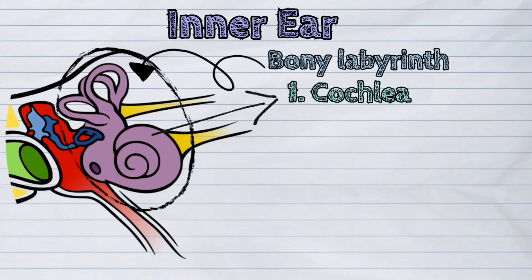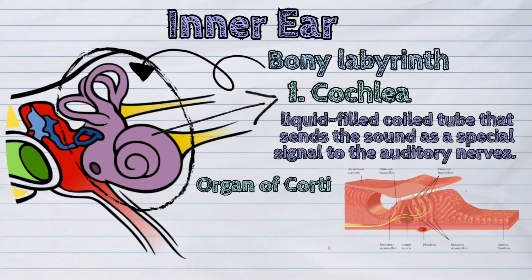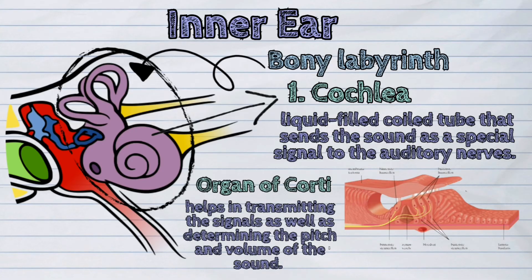First is the cochlea. It is a liquid-filled coiled tube that sends the sound as a special signal to the auditory nerves, which are the parts that transmit the sound signal to the brain. The cochlea also contains the organ of Corti, which helps in transmitting the signal as well as determining the pitch and volume of the sound.